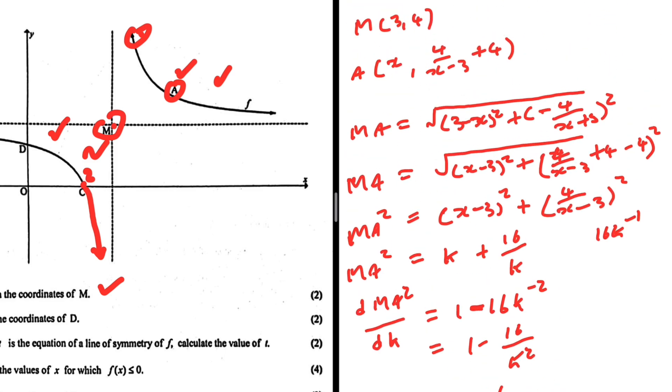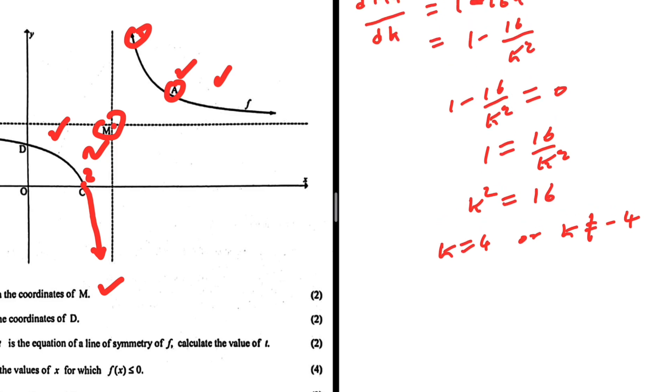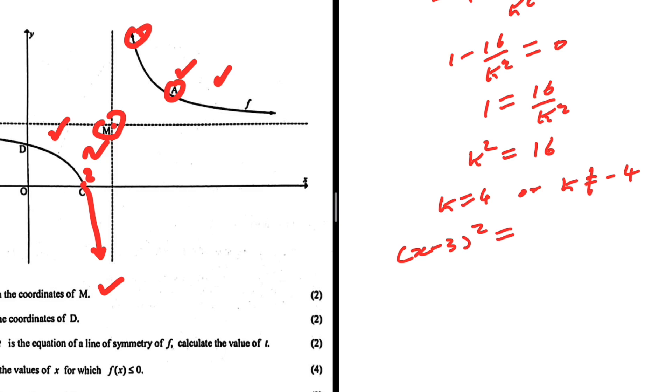So k squared equals 16. Okay, so what is k? K is x minus 3 squared. Before we can change that, let's just let k equals 4 or k equals minus 4. Obviously you cannot square something and get minus 4, so k equals 4. So we have x minus 3 squared being equal to 4. If we take square roots on both sides we get x minus 3 equals 2, x equals 5.